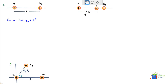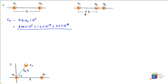Substituting the values: q1 is 1.6×10⁻¹⁹ coulombs, q2 is 3.2×10⁻¹⁹ coulombs, k equals 8.99×10⁹, and the distance is 0.02 meters. Calculating this gives 1.15×10⁻²⁴ newtons.